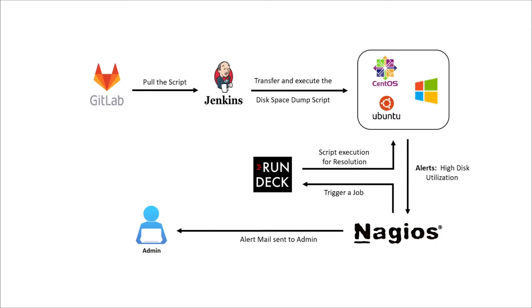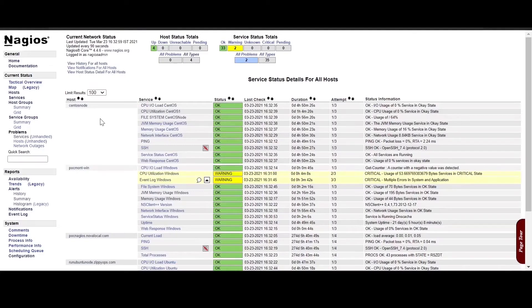Once the Rundeck job completes, disk usage will come back to normal for all three nodes. Finally, high disk usage resolution mails are sent to the admin user for all three nodes.